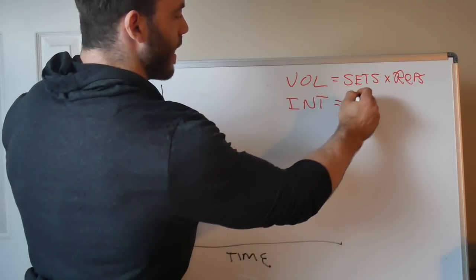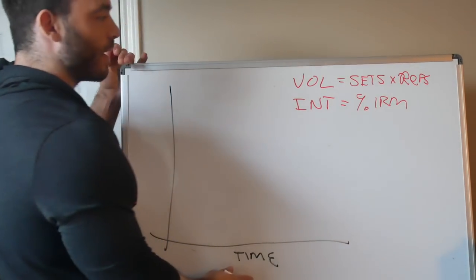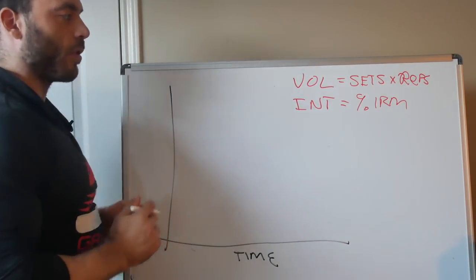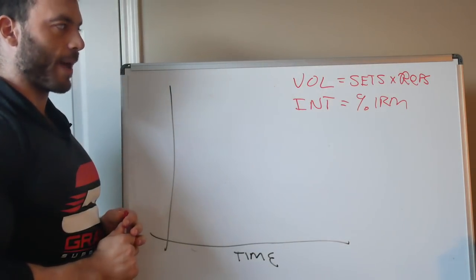Intensity, for our purposes, is just a percentage of your 1 rep max. Now when I get into talking about bodybuilding programming, we'll talk about how intensity there is a little bit different. But for strength, intensity is your percentage of 1 rep max.